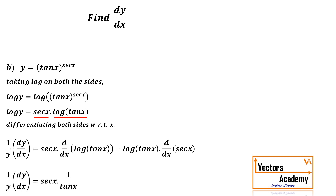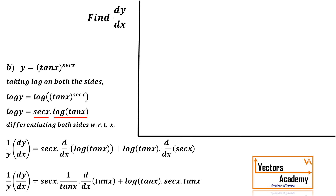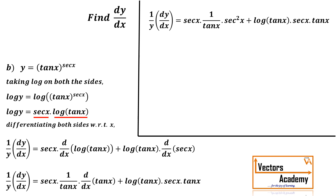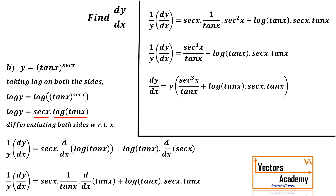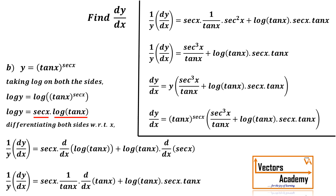Sec x remains as it is. The derivative of log tan x is 1 by tan x, and since x is replaced by tan x, by chain rule we get an extra term — derivative of tan x, which is sec squared x. For the second term, log tan x remains as it is, and derivative of sec x is sec x tan x. Simplifying, the answer for dy by dx is tan x raised to sec x, in bracket, sec cube x upon tan x plus log tan x into sec x into tan x.